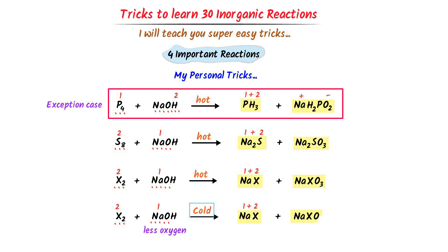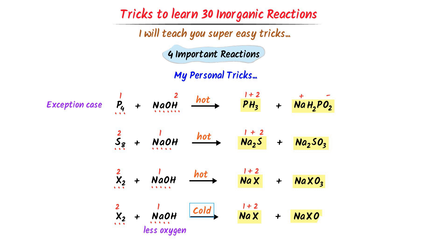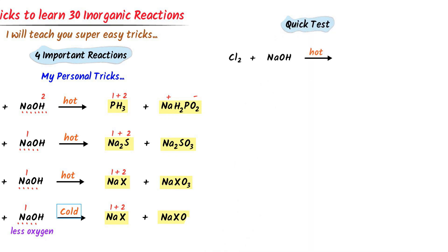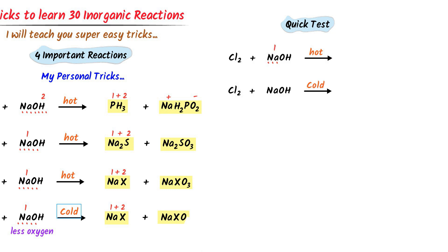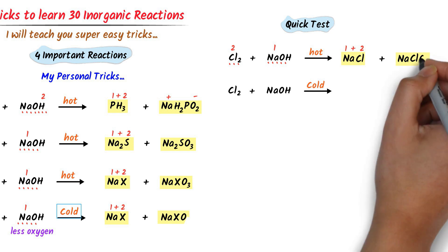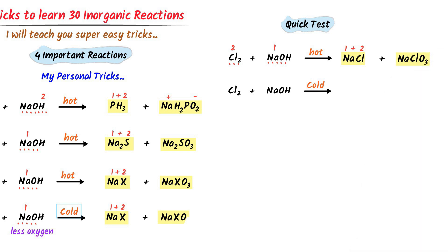Thus when phosphorus plus sodium hydroxide react in hot conditions, we get PH₃ (phosphine) and sodium hypophosphite. Now let's consider two practice reactions. According to the trick, sodium is the first element and chlorine is the second element — I get sodium chloride. For the second product, I write sodium chloride as it is with O₃. These are the products of the first reaction.